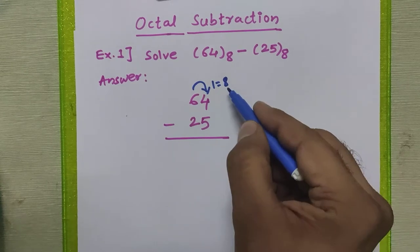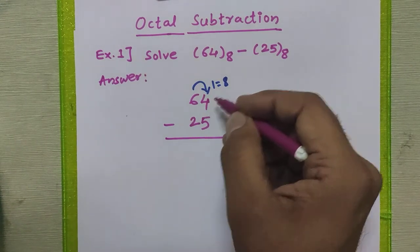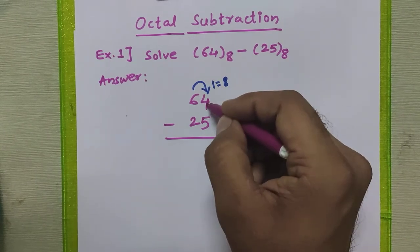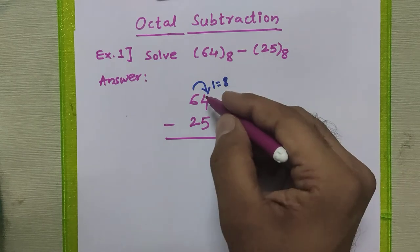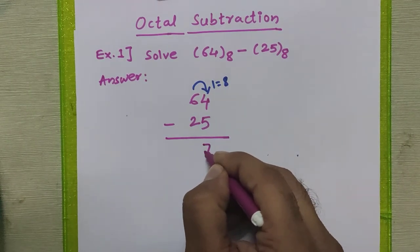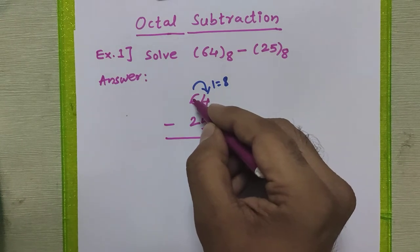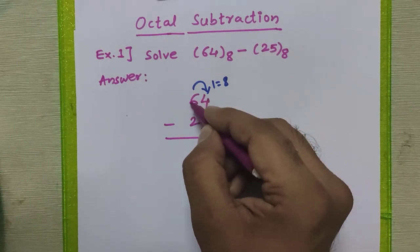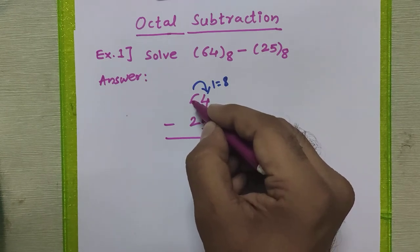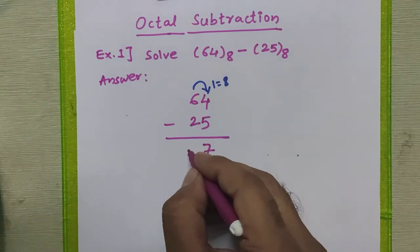This borrow of 8 gets added with 4, giving 12. Then 12 minus 5 equals 7. Since we gave 1 borrow from the next digit, that digit is reduced by 1, becoming 5. Then 5 minus 2 equals 3.